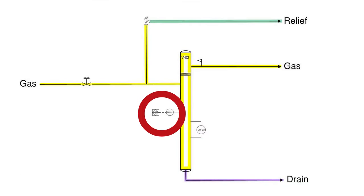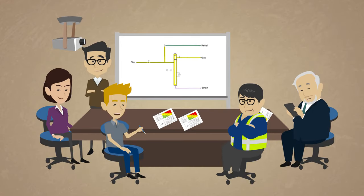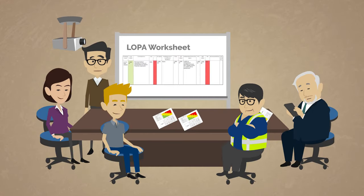There is a high-level shutdown on the suction scrubber of the compressor wired to the compressor's logic solver. If any liquids reach the scrubber, it will trip the compressor before any damage can occur. Excellent.